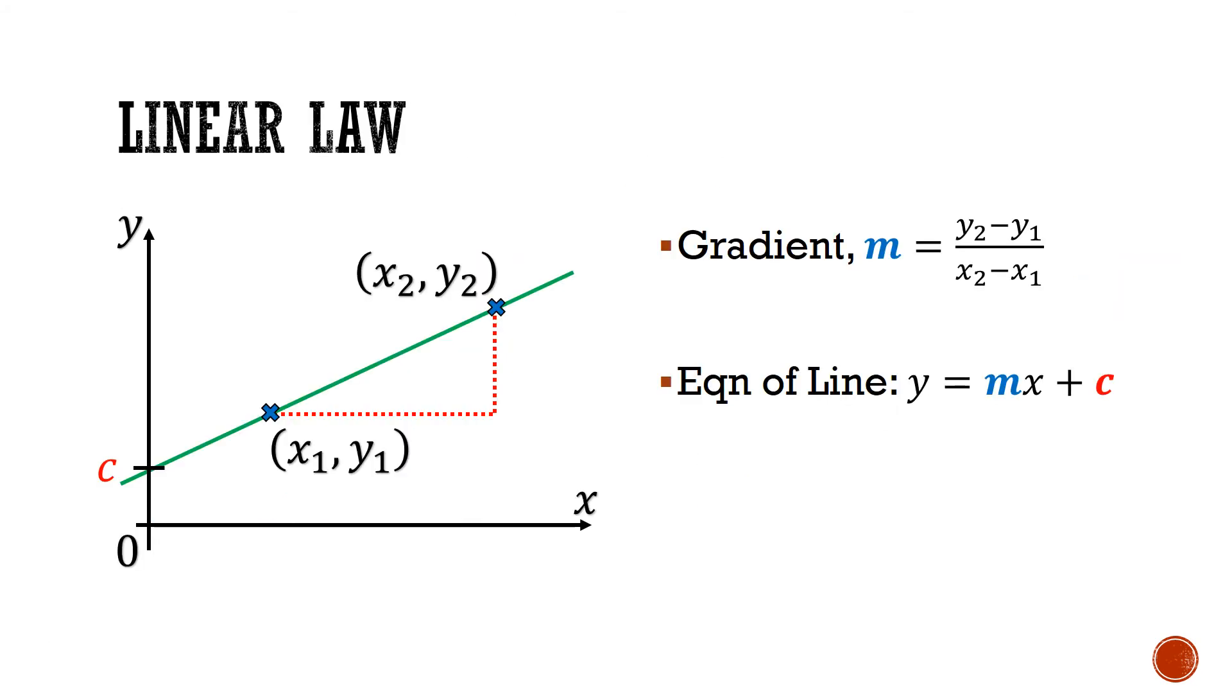So what exactly is linear law? Linear law is almost the same as our normal coordinate geometry, except that the vertical axis is no longer small y, but a capital Y, which is some function of x and y.